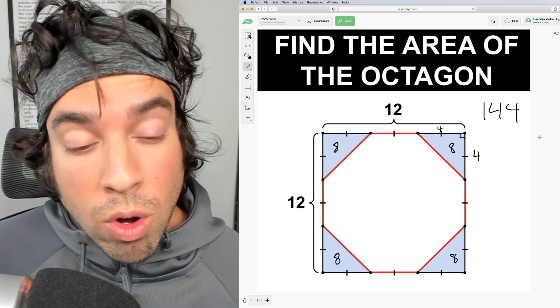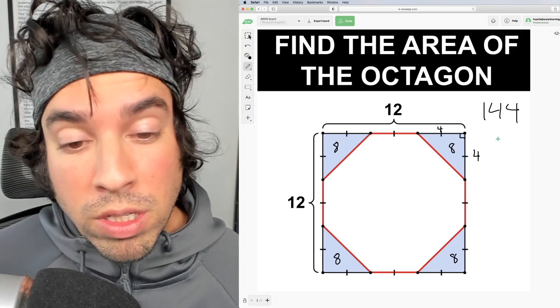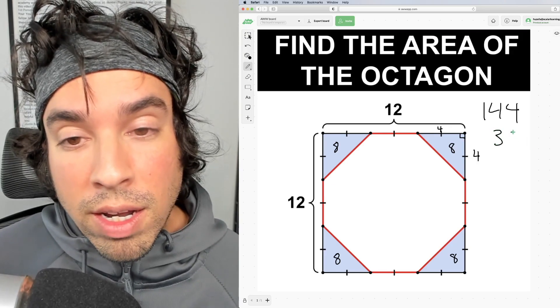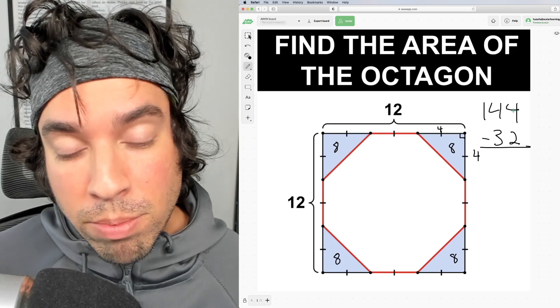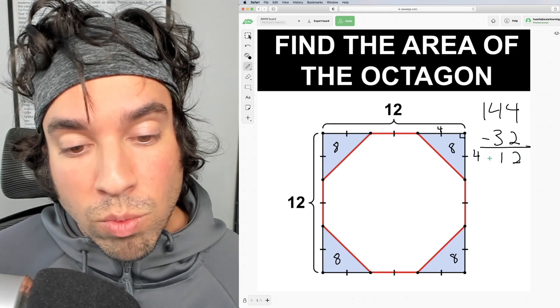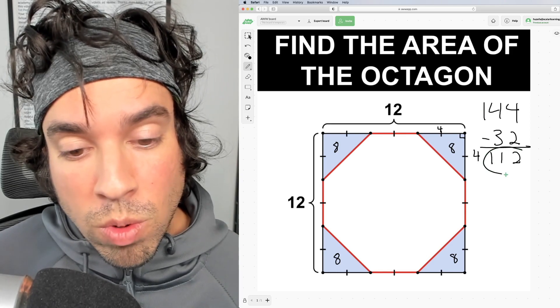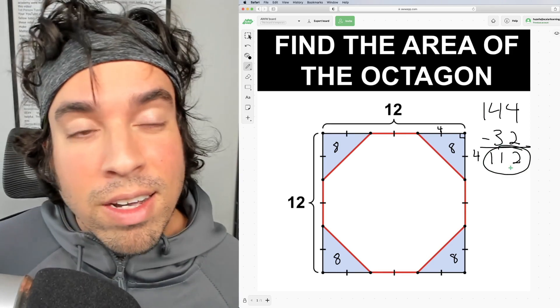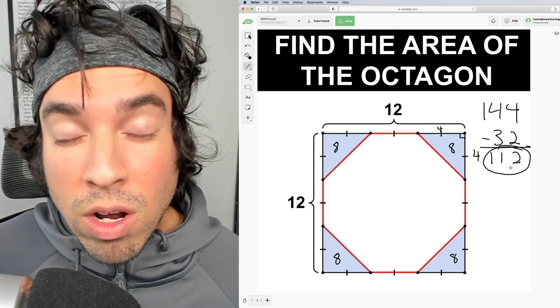So the total area of all those triangles combined ends up being four times eight, which is 32. And last but not least, now we have a nice little subtraction problem on our hands. 144 minus 32 is 112. So the final area of this octagon is 112.